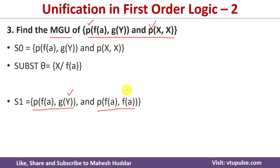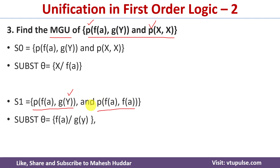Now we need to replace y, but looking at the second argument, we have g(y) in the first expression and f(a) in the second. The functions are different — g versus f — so we cannot replace y by a. Because no valid substitution exists, the two expressions cannot be made identical and the unification is not successful.